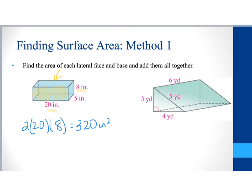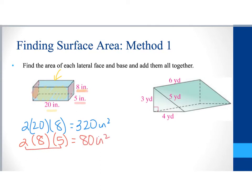The next faces are the two ends. Each end has a height of 8 and a width of 5. So we go 2 times 8 times 5. Two times 5 is 10, times 8 gives us 80 square inches.